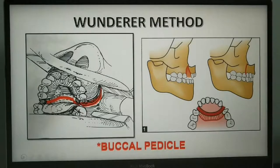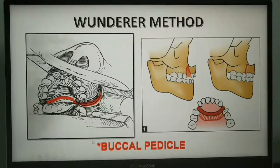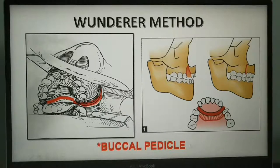The first technique of AMO is the Wunderer method. In the Wunderer method, the segmentalized anterior maxilla is preserved with a buccal pedicle — the blood supply is maintained through the buccal pedicle. This is very important to remember.